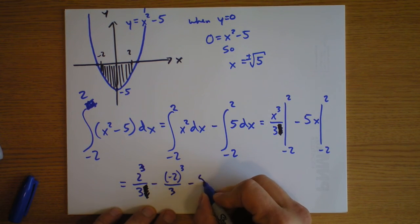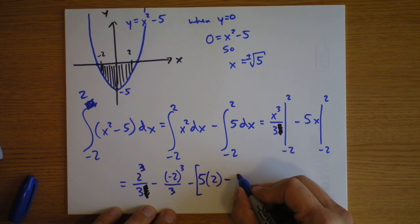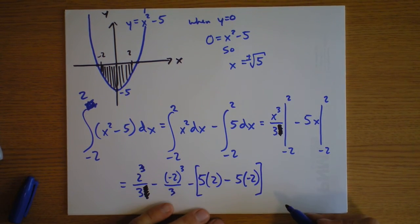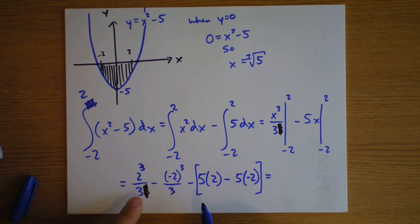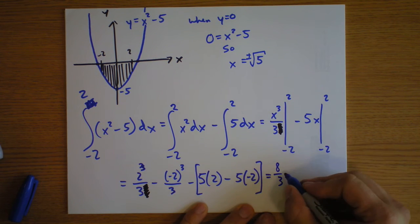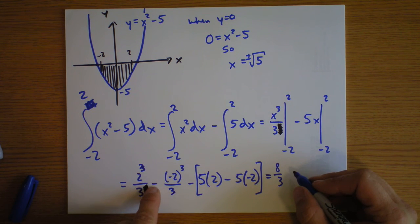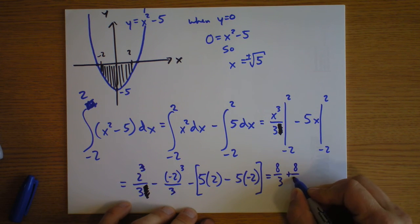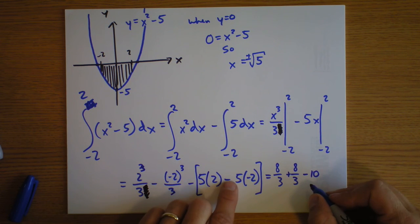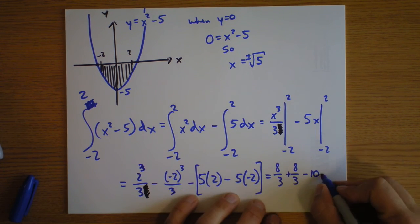Divided by 3. And, then I have to subtract this stuff. So, this is going to be minus 5 times 2 minus 5 times negative 2. Alright. Let's see what we get. Interesting. Okay. 2³ is 8. So, we've got 8/3. And, then we've got... Well, let's see. Negative 2³ is negative 8. But, there's a minus sign out here. So, we're going to add 8/3. And, then we subtract 10. And, then we're going to... Ooh, look at this. This is positive. So, that's negative. And, we're subtracting another 10.